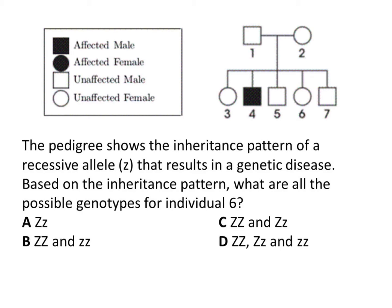The pedigree shows the inheritance pattern of a recessive allele, little z, that results in a genetic disease. Based on the inheritance pattern, what are all the possible genotypes for individual six?